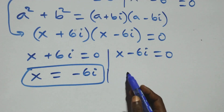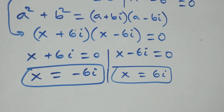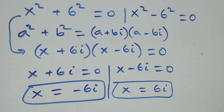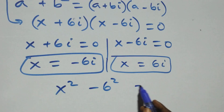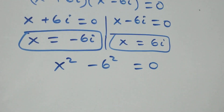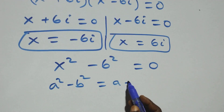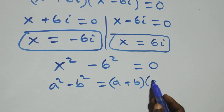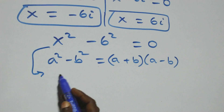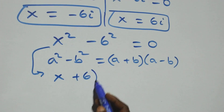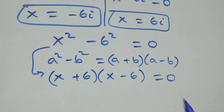Solving for the second case, which is x squared minus 6 squared equals 0. This follows from a squared minus b squared = (a + b)(a − b), so we have (x + 6)(x − 6) equals 0.